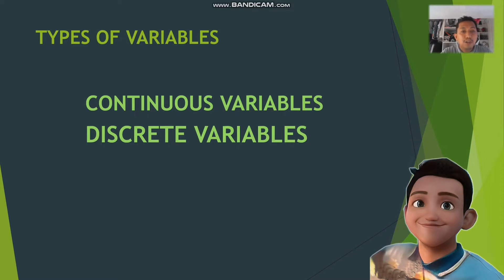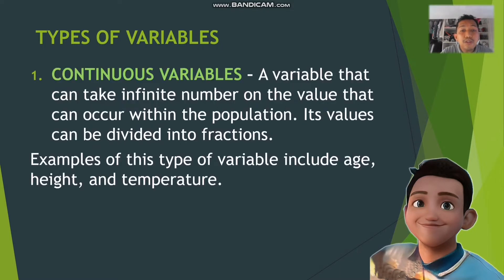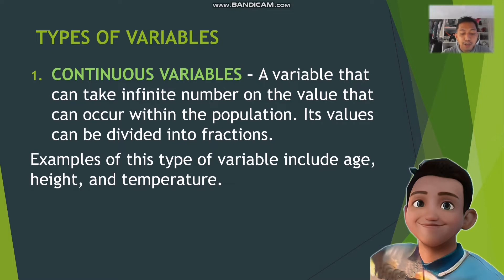Let's start first with continuous variables. Continuous variables are variables that can take infinite numbers of values that can occur within the population. Their values can be divided into fractions. Examples include age, height, and temperature. Continuous variables are often used in quantitative data. There are two types of continuous variables: interval variables and ratio variables.